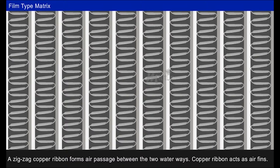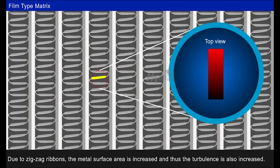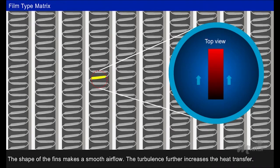Copper ribbon acts as air fins. Due to zigzag ribbons, the metal surface area is increased and thus the turbulence is also increased. The shape of the fins makes a smooth air flow, and the turbulence further increases the heat transfer.